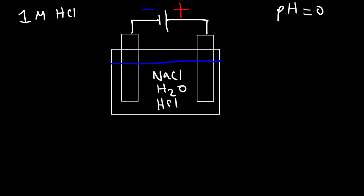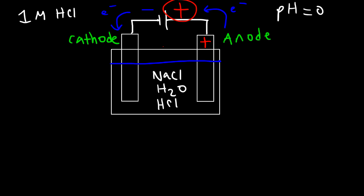Identify the anode and the cathode and determine the reactions that occur at each. Electrons are going to flow towards the positive terminal of the battery and leave from the negative terminal. Electrons always flow from the anode to the cathode. So the electrode on the left side is the cathode and the electrode on the right side is the anode. The anode is positively charged since it's attached to the positive terminal of the battery, and the cathode is negatively charged. There is an electric field that flows from the anode to the cathode.